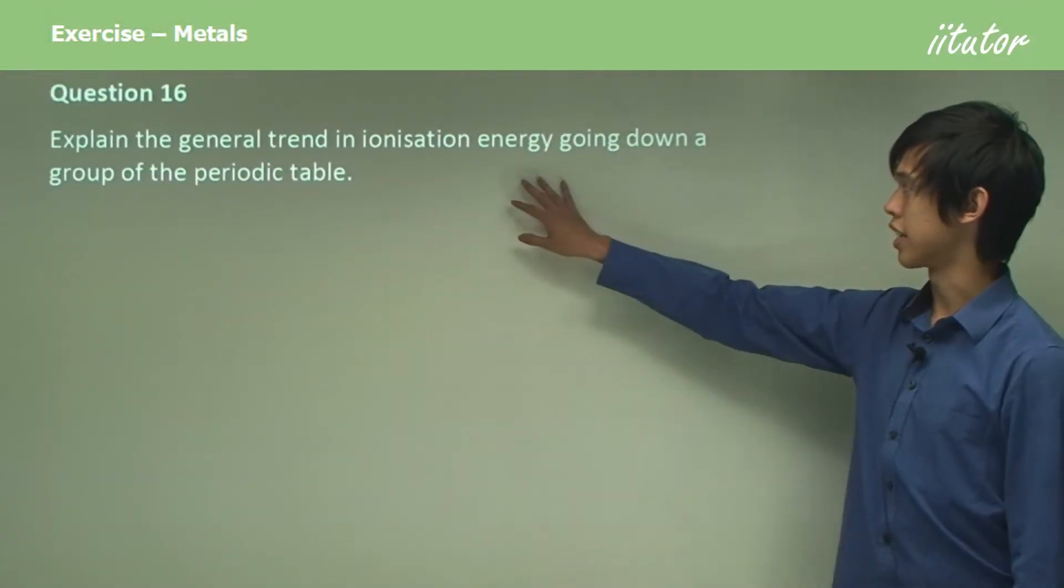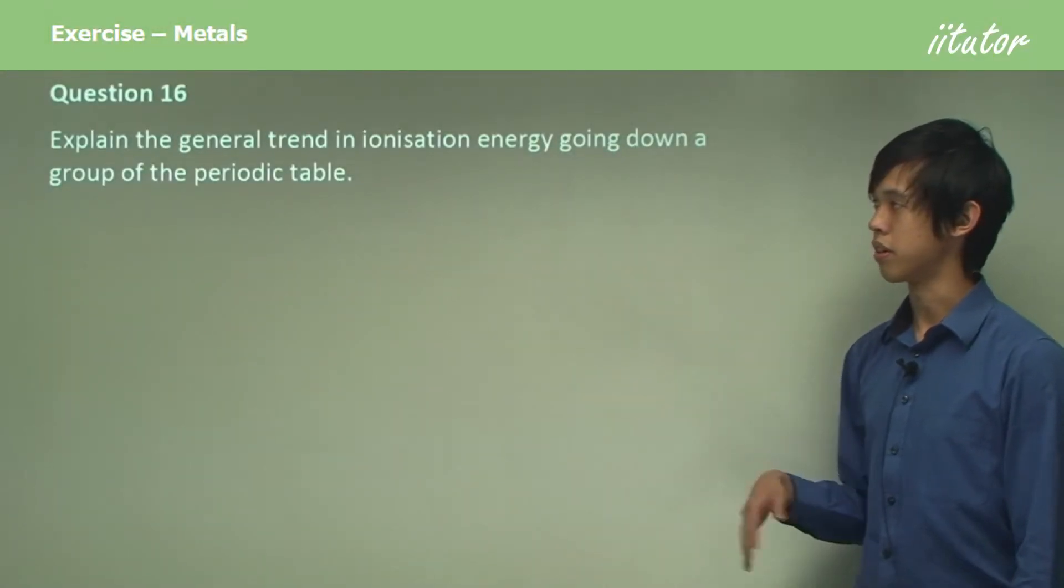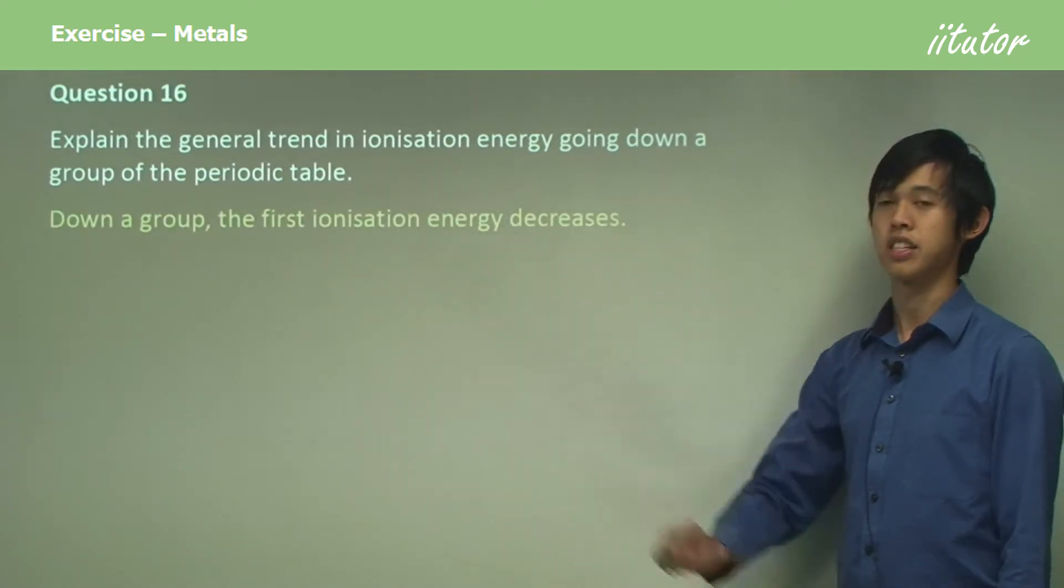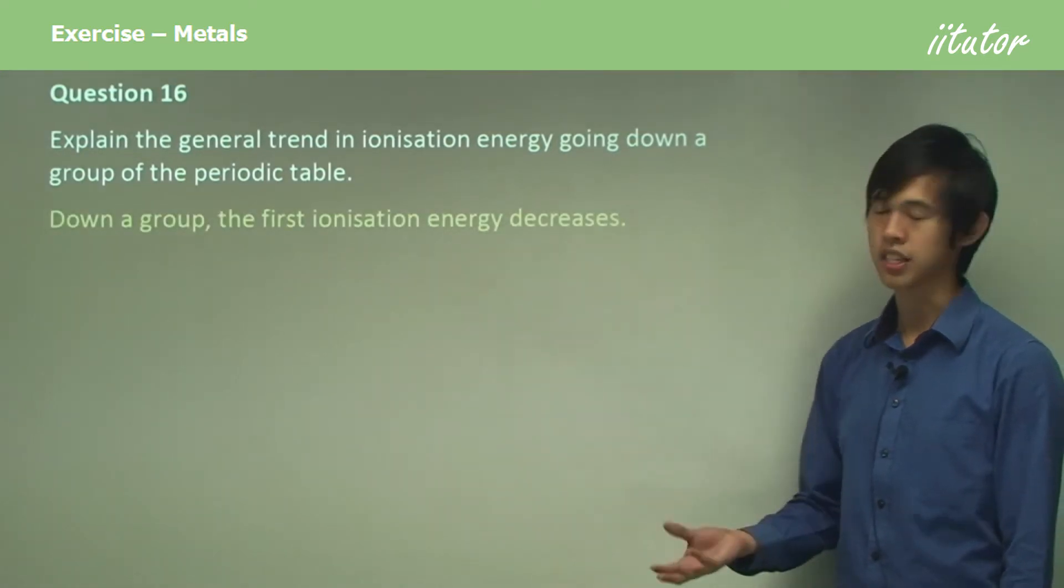Explain the general trend in ionization energy going down a group of the periodic table. Well, down a group the ionization energy decreases, or the first ionization energy.